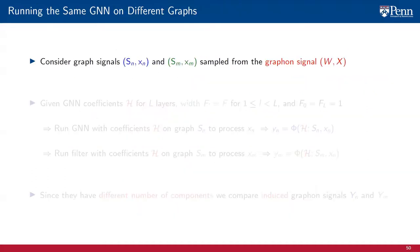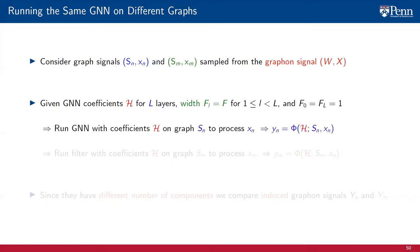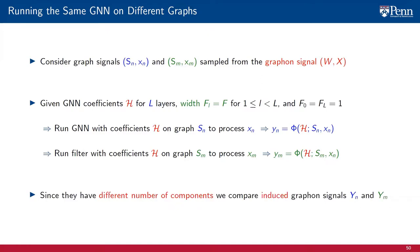Let us formally set up the transferability problem for GNNs. Consider the graph signals S_N X_N and S_M X_M sampled from the graphon signal WX. Let H be the set of coefficients of a graph neural network with L layers and F features per layer, except for the input features F_0 and output features F_L, which are equal to 1. Run a GNN Y_N with coefficients H on the graph G_N to process the graph signal X_N, and a GNN Y_M with coefficients H on the graph G_M to process the graph signal X_M. We want to compare Y_N and Y_M, but this is not possible because these are graph signals and therefore vectors with different dimensions N and M. To solve this problem, we consider the induced graphon signals Y_N and Y_M.